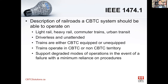It gives a basic description of the type of railroad that CBTC systems should operate on. Basically what it says is that it should be able to operate on any type of railroad, whether it's light rail, heavy rail, commuter trains, urban transit, or mainline — it doesn't matter. CBTC should be able to work on all of them.